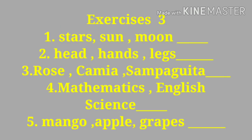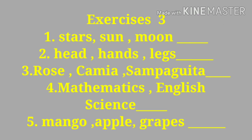Let us now move to exercise number three. Tell me the appropriate heading for the following group of ideas or words. A. Stars, B. Sun, C. Moon. What is the appropriate heading? 'Heavenly bodies.' Very good. Number two: A. Head, B. Hands, C. Legs. What is the appropriate heading? 'Parts of the body.'